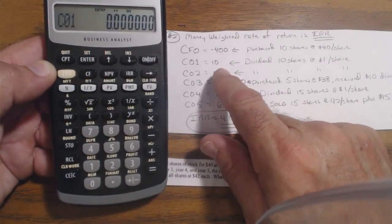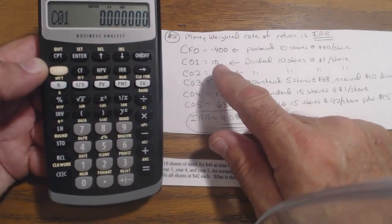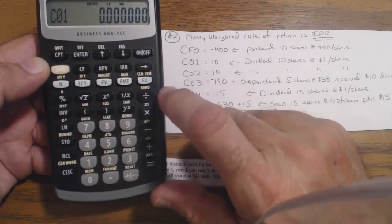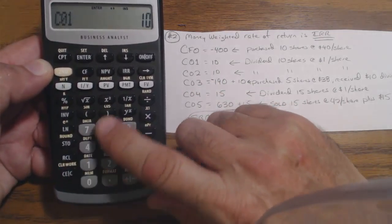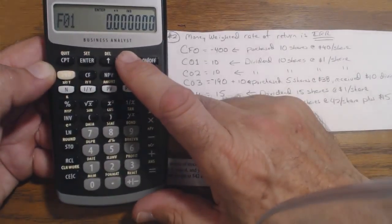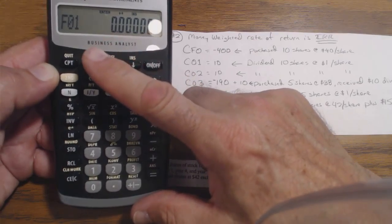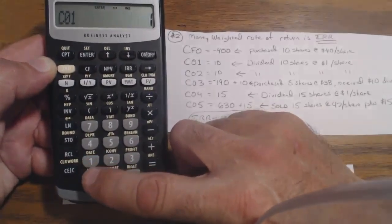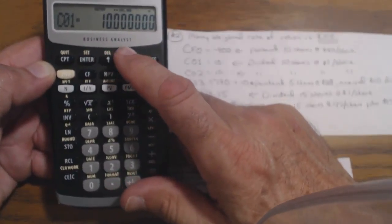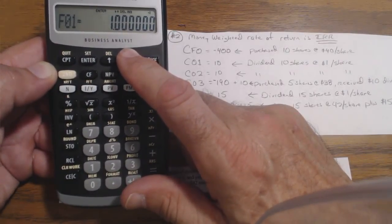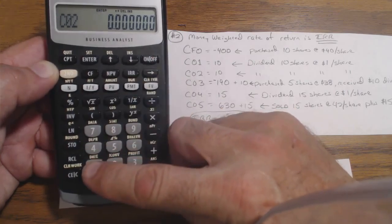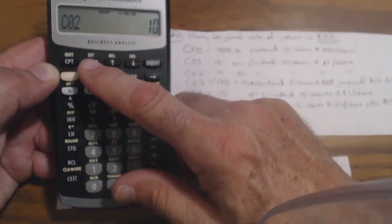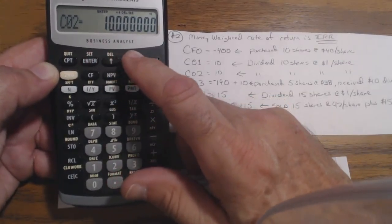Now you've got those 10 shares at the end of T1 that you get the dividends for. So that's $10. See, now watch if I hit the arrow. Nothing comes up as F01. That's because I forgot to hit enter. So $10, enter, period 1, frequency 1. C02, another $10, because we get the $10 dividend again for the 10 shares.